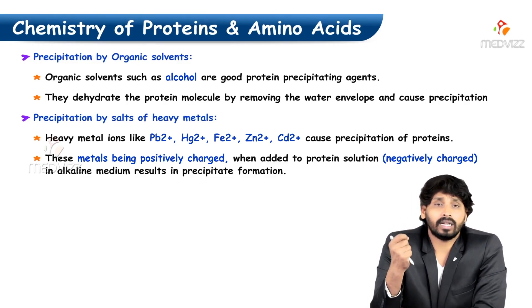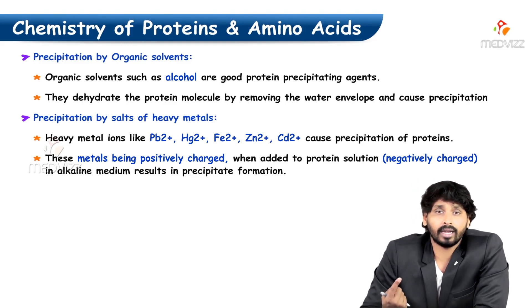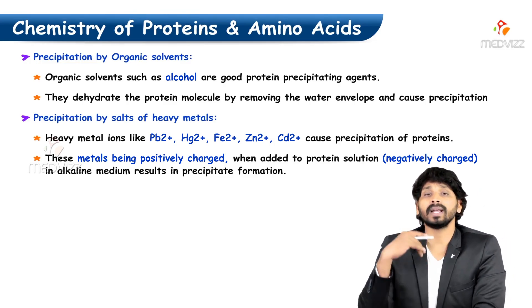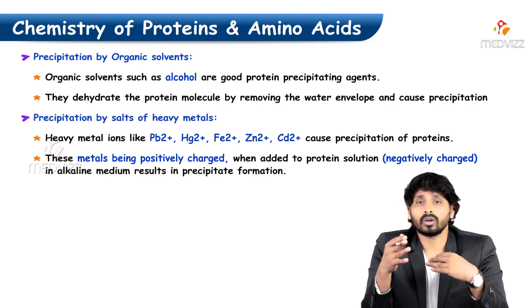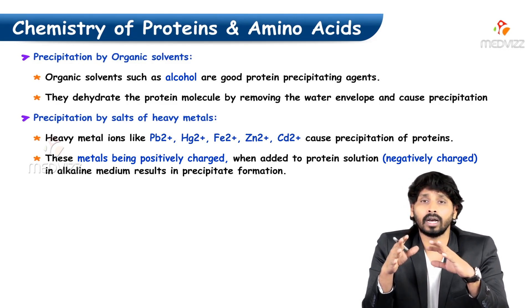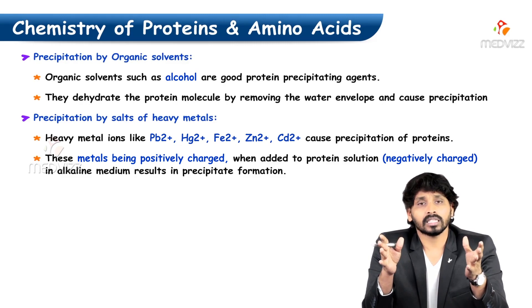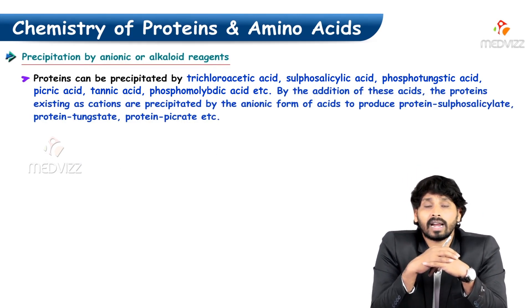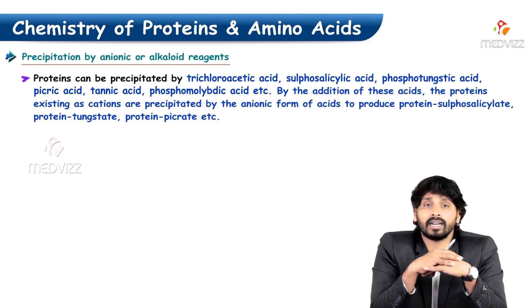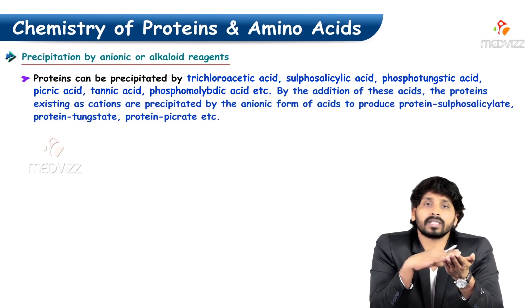Precipitation by salts of heavy metals — lead, mercury, iron, zinc, and cadmium — also causes precipitation of proteins. These metals are positively charged; when added to a protein solution, the proteins in solution are negatively charged, and when both positive and negative charges collide, precipitation of protein occurs. Precipitation by anionic or alkaloid reagents: proteins can be precipitated by trichloroacetic acid, sulfosalicylic acid, phosphotungstic acid, picric acid, tannic acid, and phosphomolybdic acid. Proteins existing as cations are precipitated by the anionic form of these acids.